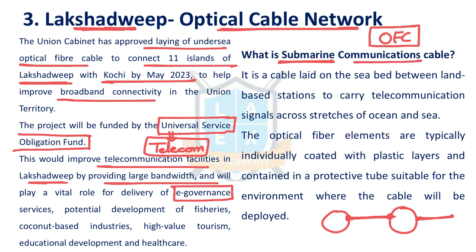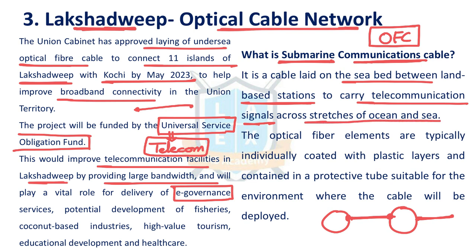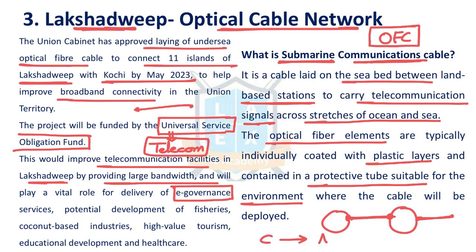A submarine optical fiber cable network is a cable laid on the seabed between land-based stations — in this case from Kochi to Lakshadweep islands — to carry telecommunication signals across stretches of oceans. The optical fiber elements are coated with plastic layers in a protected tube suitable for the marine environment and will not harm marine organisms. Already last year, Andaman and Nicobar islands were connected from Chennai, and now Lakshadweep will be connected by 2023.